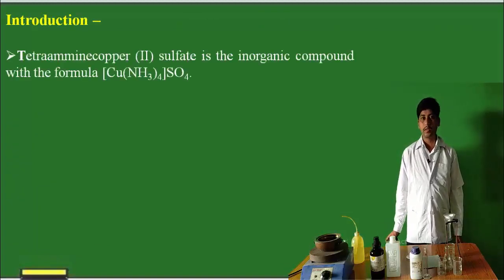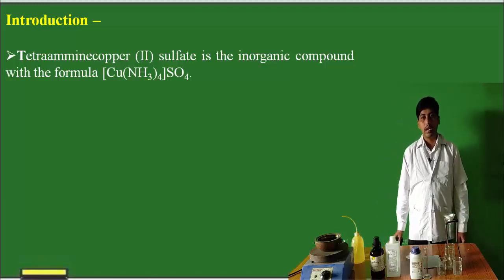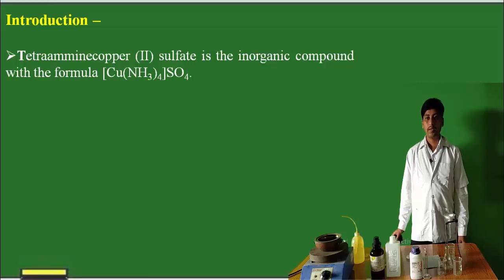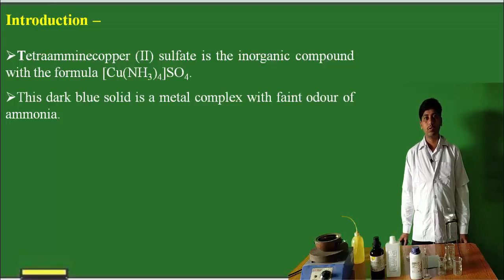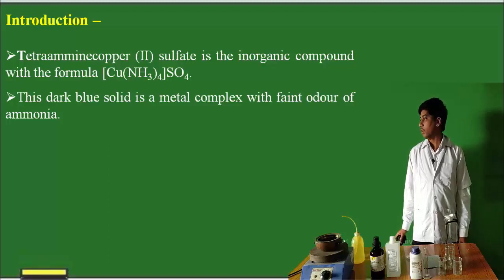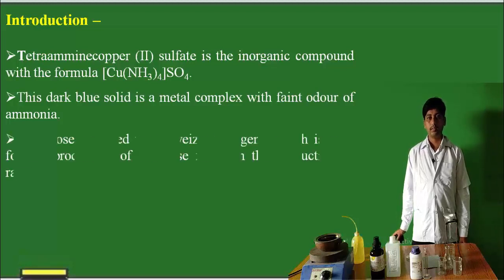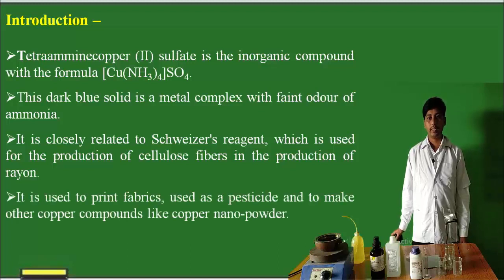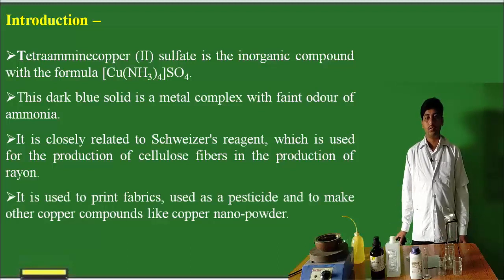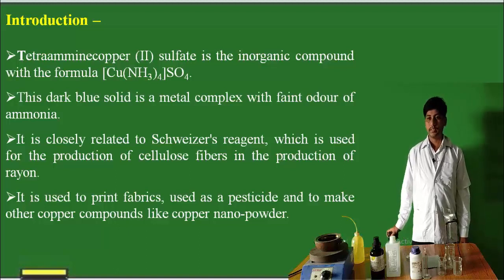First is the introduction. Tetramine copper sulphate is an ionic compound — that is, a coordination complex — having the formula [Cu(NH3)4]SO4. This is a dark blue coloured solid compound having the odour of ammonia. It is closely related with the Schweizer's reagent, which is used for the production of cellulose fibres in the production of rayon. It is also used in print fabrics, used as pesticides, and used to make other copper compounds like copper nanopowder. These are some uses of this complex.